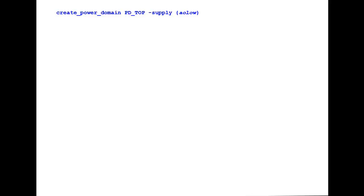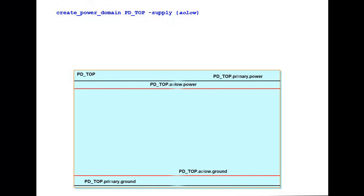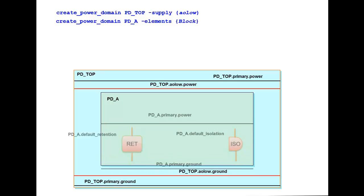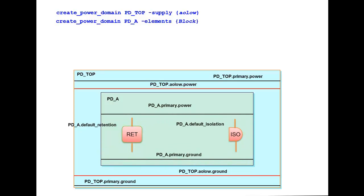creation of PD_TOP creates two supply handles: PD_TOP.primary and PD_TOP.evolo as shown. And PD_A power domain creates PD_A.primary, PD_A.default_isolation, and default_retention.